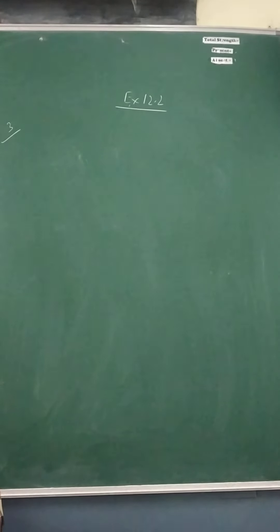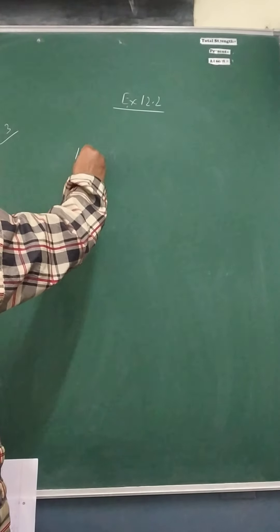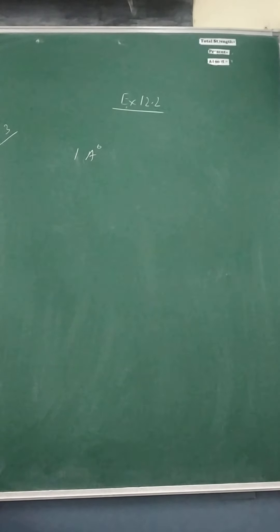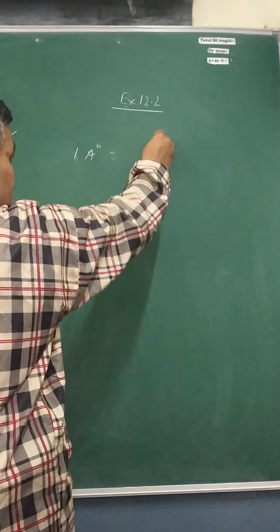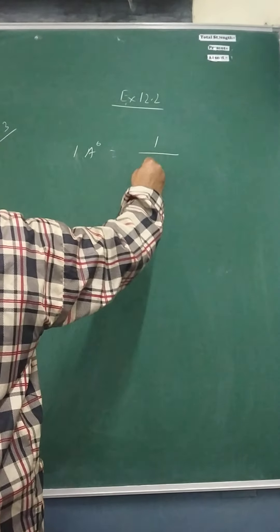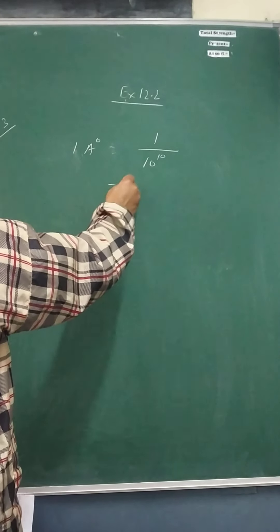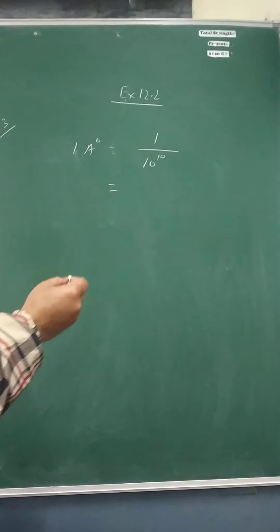In question number 3, express the numbers appearing in the following statements in standard form. Here is 1 angstrom. 1 angstrom is equal to 1 upon 10 raised to power 10. If you put ending zeros after the decimal there is no significance in mathematics, so it remains 1. If you shift this to the numerator the power becomes negative. So 1 angstrom equals 1 × 10⁻¹⁰ meters.